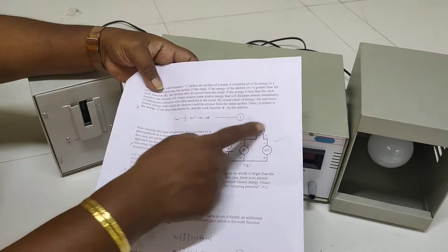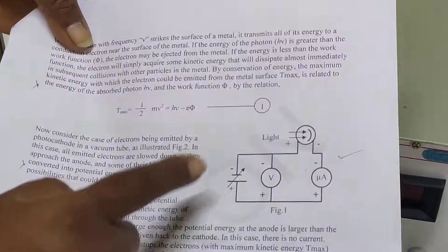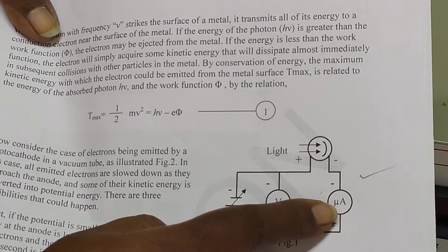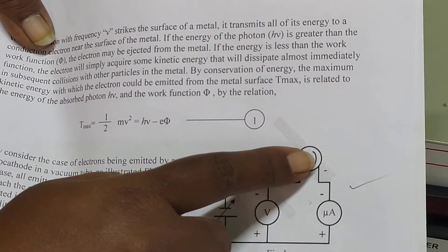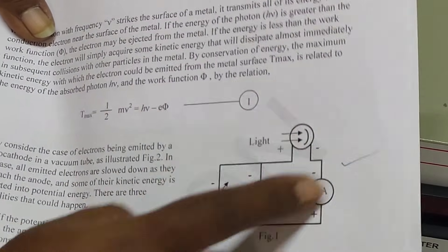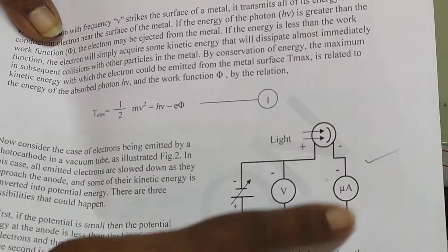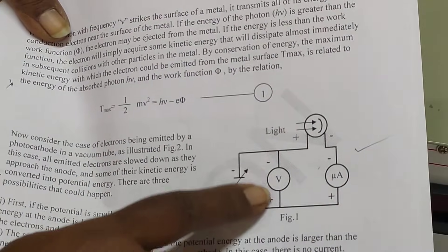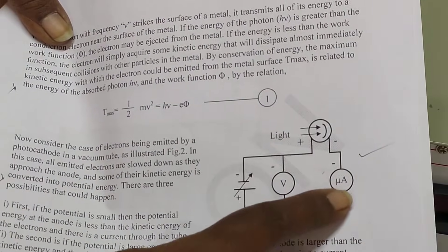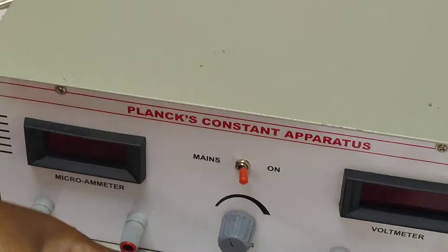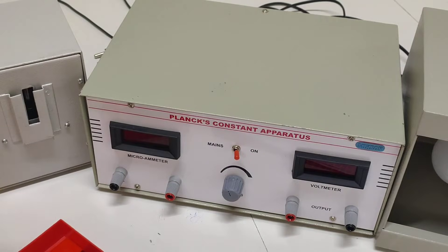This is the circuit required to perform this experiment. The voltmeter and microammeter are shown, and light is falling on the metal surface — this part is the metal surface. According to this circuit, I am going to give the connections. First, the voltmeter positive and microammeter positive are connected. I will take the patch bar and give the connection.